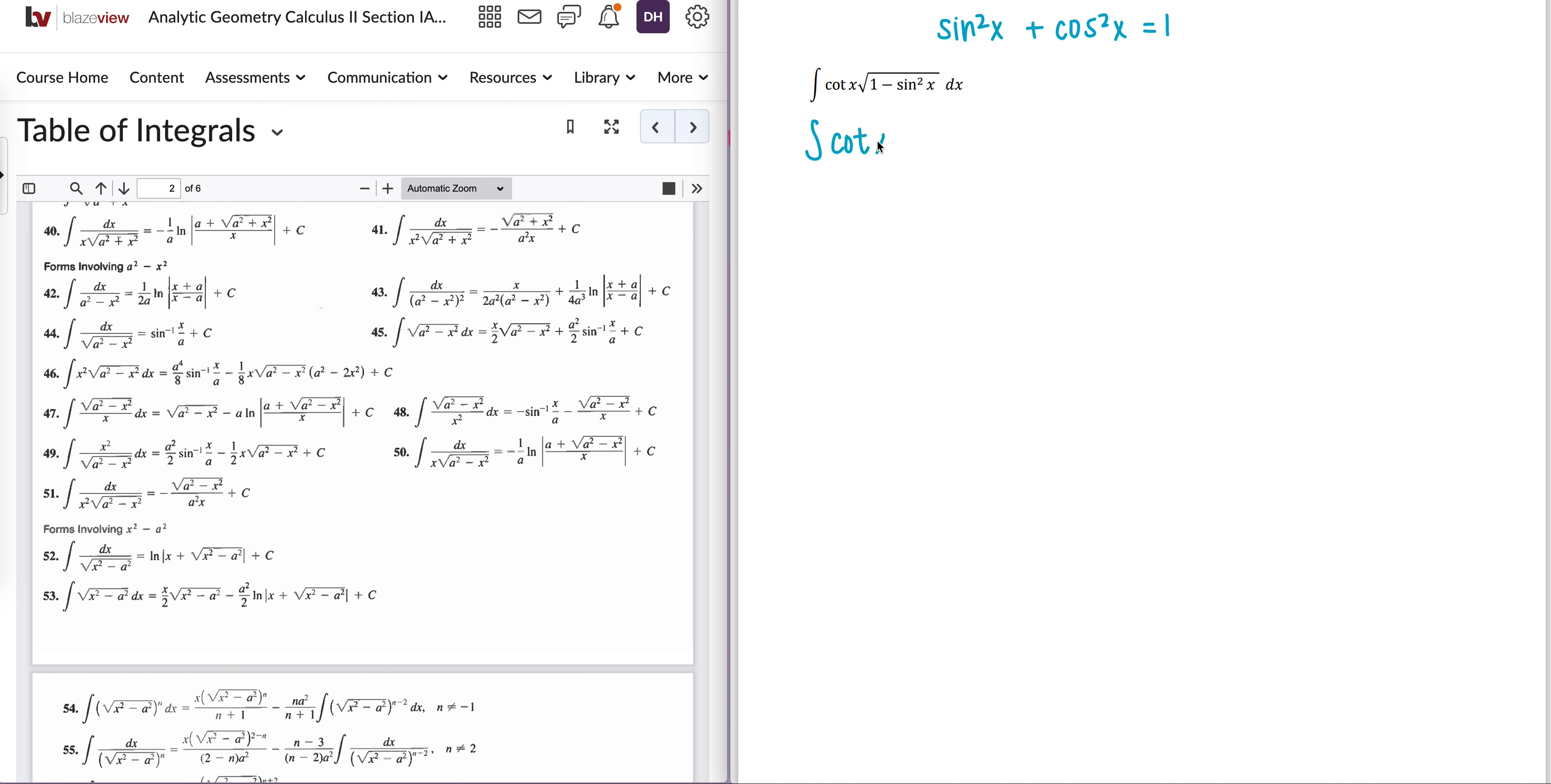So then I have cotangent x times the square root of cosine squared x dx. When I take the square root of cosine squared, I'm just left with a cosine. So I've got cotangent x times cosine x dx.